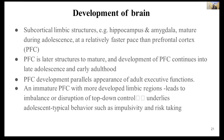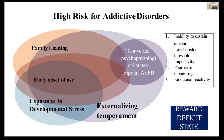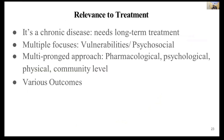High-risk factors for addictive disorders include: family/genetic loading with a first-degree relative having substance use disorder; early onset of use before age 25 or in adolescence; exposure to developmental stress; externalizing temperament such as ADHD or conduct disorder; and psychopathological states such as bipolar disorder or antisocial personality disorder. Relevance to treatment: it is a chronic disease requiring long-term treatment with multiple focuses on vulnerability and psychosocial multi-pronged approaches — pharmacological, psychological, physical, and community-level — with outcomes varying from patient to patient and substance to substance.